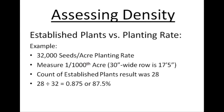Take your counts and divide them by your planting rate to calculate establishment percentage. For example, let's say you're planting at a rate of 32,000 seeds per acre. If you are in 30-inch rows, then one one-thousandth of an acre is 17 feet 5 inches along the row, so the planter should drop 32 seeds in that area. Run a measuring tape 17 feet 5 inches and count the plants. Let's say you end up with a count of 28 plants.